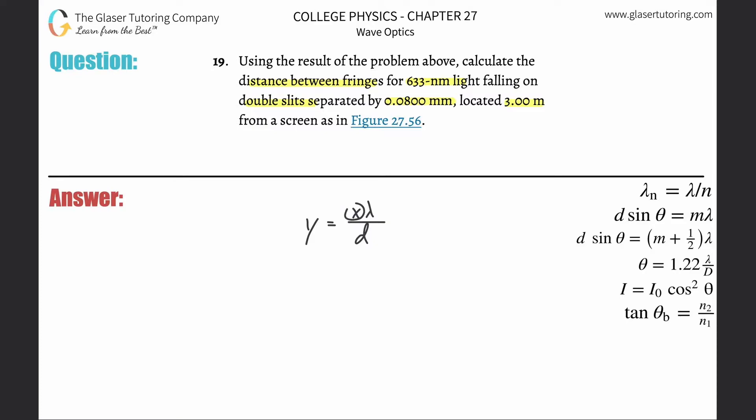x will represent the distance from the screen, lambda will represent the wavelength of the light, and d will represent the distance between the double slits. So basically all we have to do here is just plug in the formula. You can memorize this formula too; you don't necessarily have to know how to derive it.